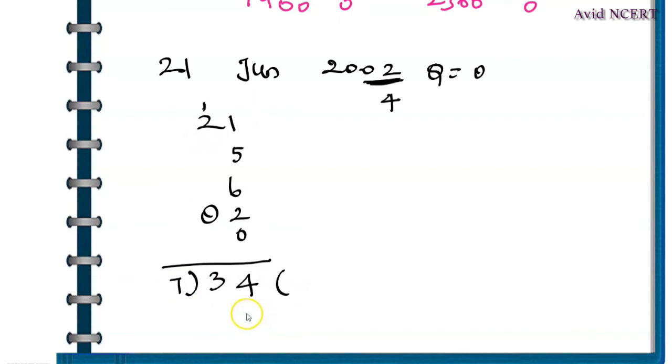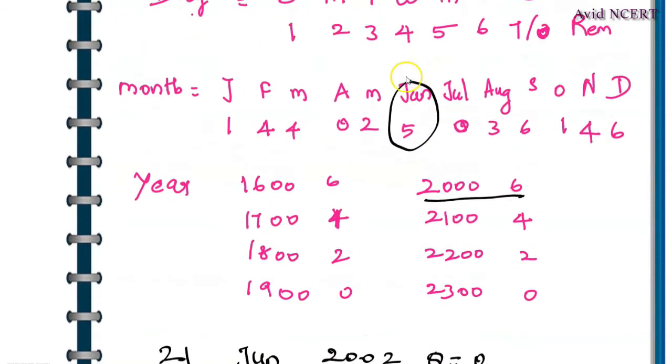Now divide this by 7 and check for the remainder. 7 times 4 is 28. We have to check for the remainder, which is 34 minus 28 equals 6. So we have to check for the code for this 6.